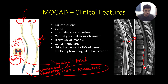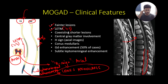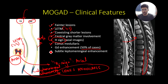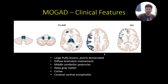Smooth spinal leptomeningeal enhancement is well seen on contrast MRI images. To summarize: lesions can present as LETM — three or more contiguous vertebral segments — with possible coexisting shorter myelitis lesions. There is predominant central gray matter involvement presenting as the H sign on axial MRI. There is predilection to involve the conus medullaris, only 50 percent of cases have gadolinium enhancement, and the unique pattern is subtle spinal leptomeningeal enhancement.